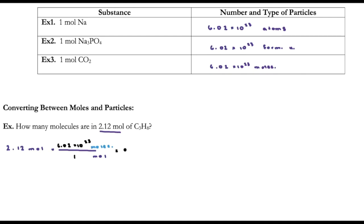So I'm going to take 2.12 and multiply by 6.02 × 10²³. Unrounded, I get 1.276 × 10²⁴ — that is a lot of molecules, which shows you just how tiny they are. Now I need to round properly: 2.12 has three sig figs, so my final answer needs three sig figs. Rounding up, I get 1.28 × 10²⁴ molecules. And that is your answer.